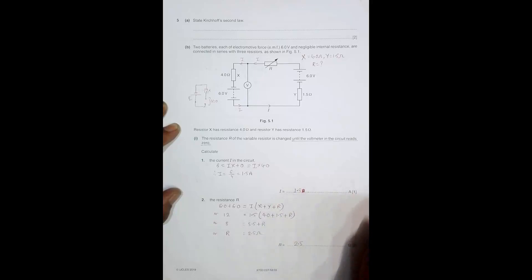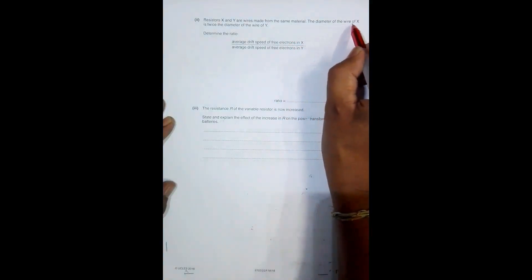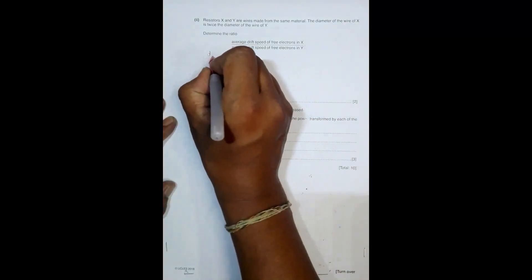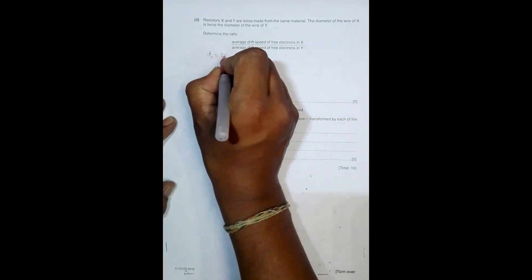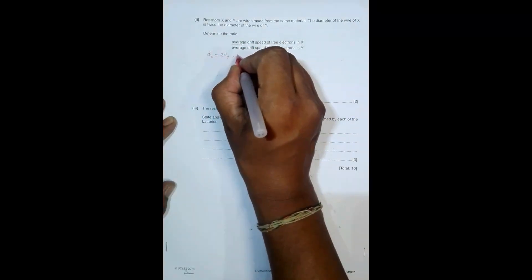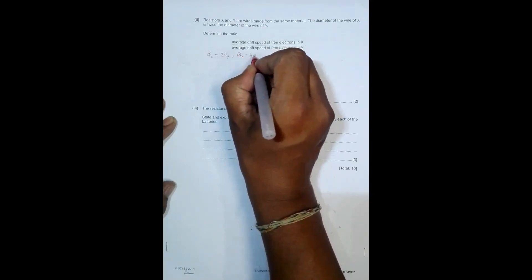In the next question, it says resistors X and Y are made of the same material, which means their resistivity and other properties like number of free electrons are the same. The diameter of wire X is twice the diameter of wire Y, which means the cross-sectional area of X should be 4 times the cross-sectional area of Y.